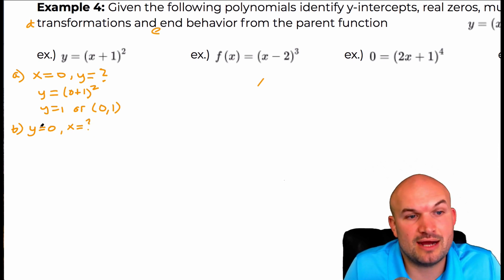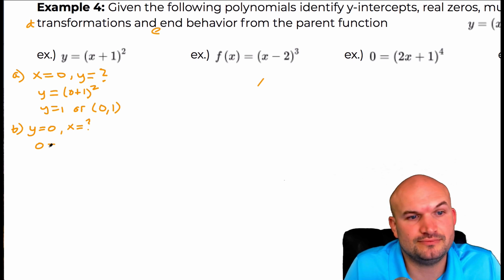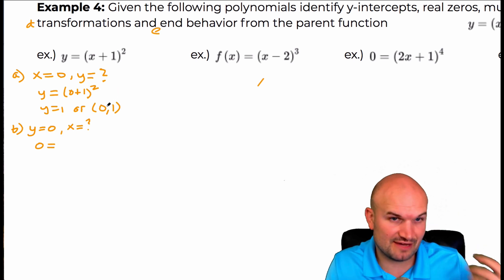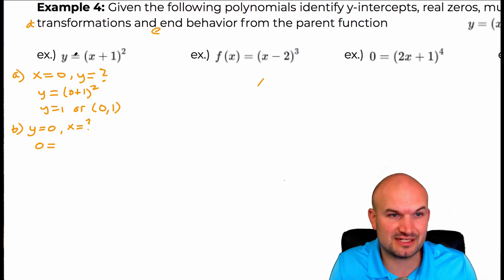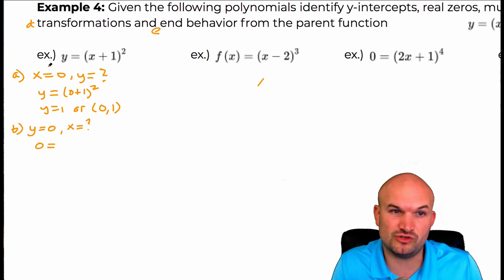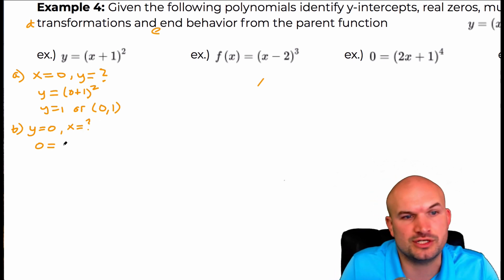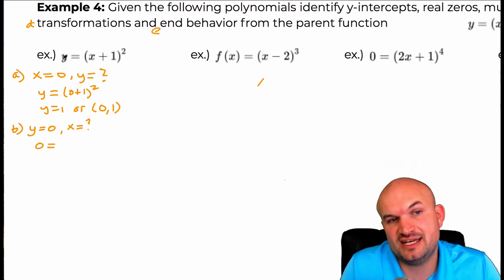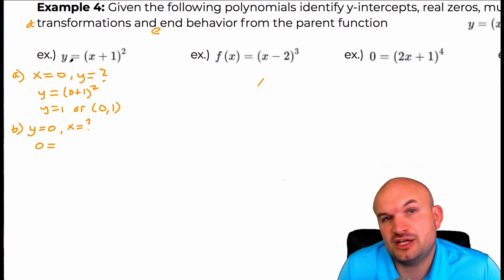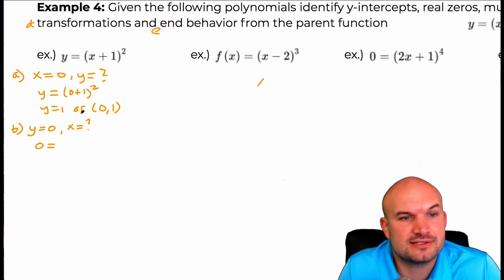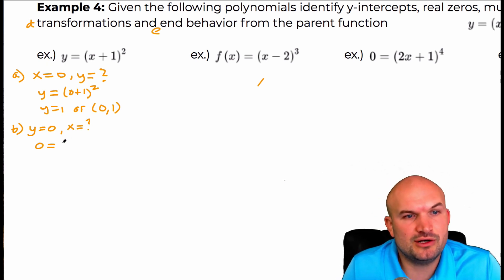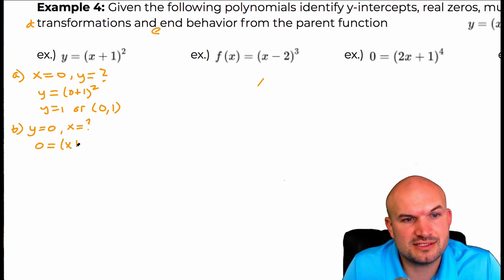We're going to replace y with zero. Remember, y and f of x are really interchangeable — they're both the output of a function. In this case, we're using y in the notation, but I could have used f of x. So we're going to set zero equal to x plus one squared.